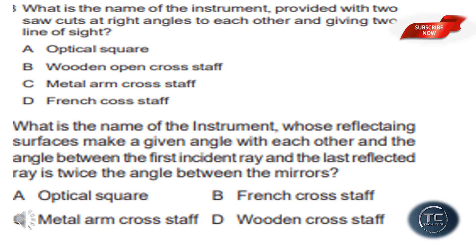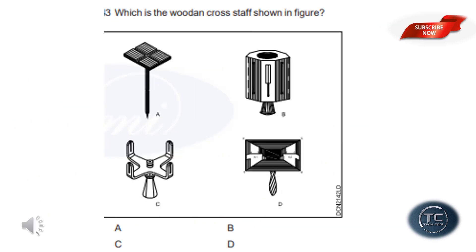What is the name of the instrument whose reflective surfaces make a given angle with each other, and the angle between the first incident ray and the last reflected ray is twice the angle between the mirrors? The answer is optical square. The question asks which is the wooden cross staff shown in the figure. Option A is wooden cross staff, option B is French cross staff, option C is optical square, option D is metal arm cross staff.